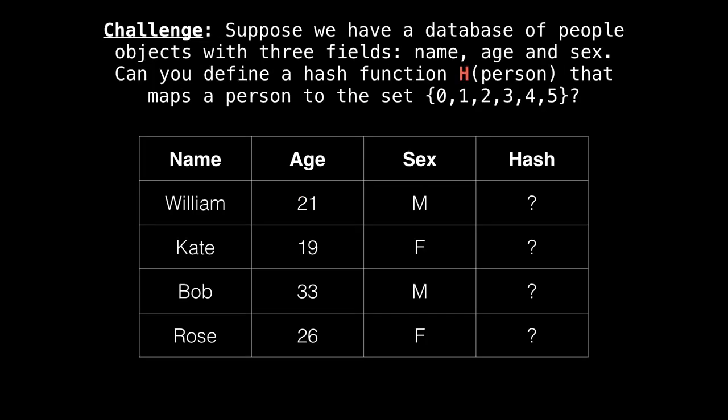Alright, here's a mini challenge for you. Suppose we have a database of people below. And each person has three fields, they have an age, a name, and a sex. I want you to define a hash function, h of a person, where you're going to be given a person object as an argument. And I want you to create a hash function that's going to map a person to the set of values 0 through 5 inclusive. You can pause the video, just create any hash function that does this, given the three fields.